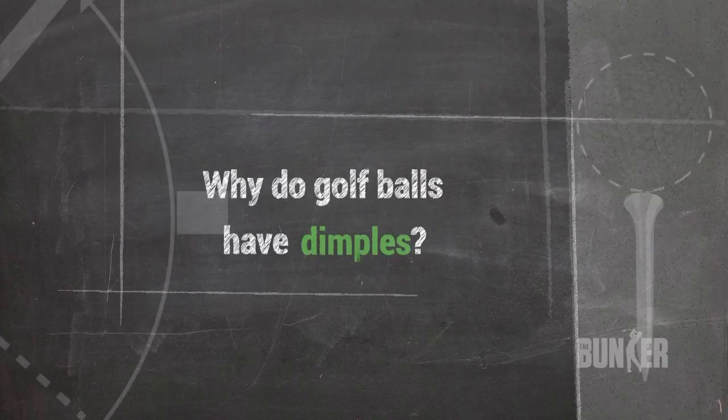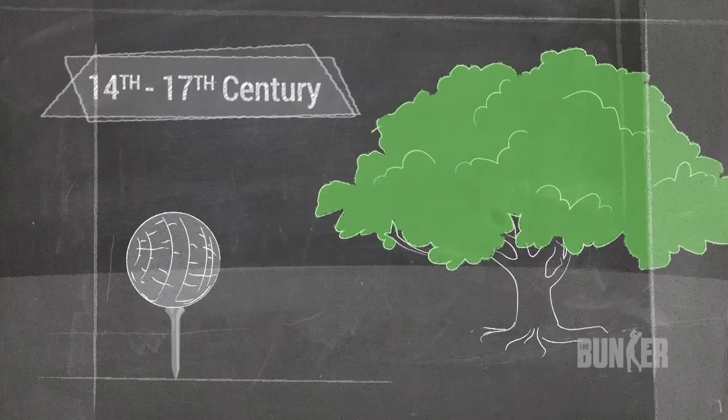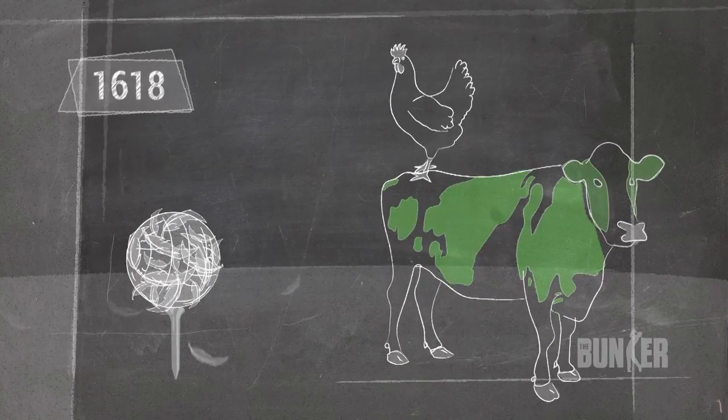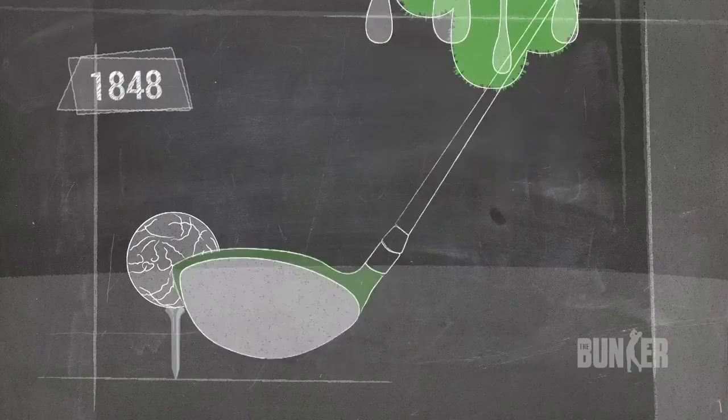The reason why golf balls have dimples is a story of natural selection. First, they were smooth and fashioned out of wood. And after being stuffed with feathers and coated in a shiny leather shell, they were crafted from a rubbery tree sap.